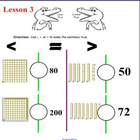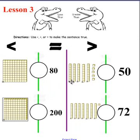Here we are at lesson three. Again, we have a flat, and we need to count these up and determine if it's greater than, equal to, or less than eighty. And here you'll notice we have two flats. Over here we have some tens, and we have some more tens. Pick up your red pen and place the correct symbol in each one of these. Please do that now.